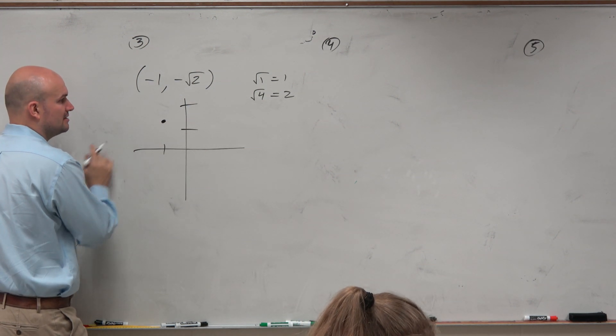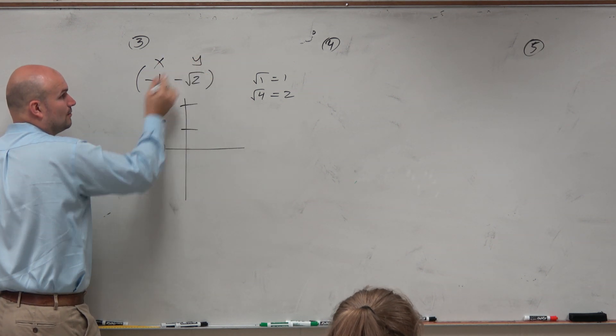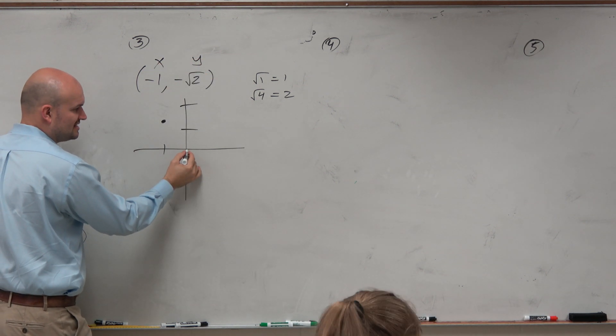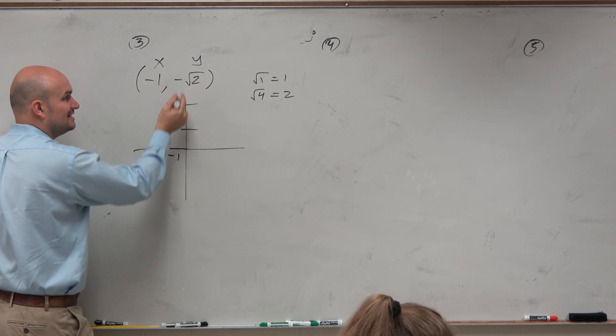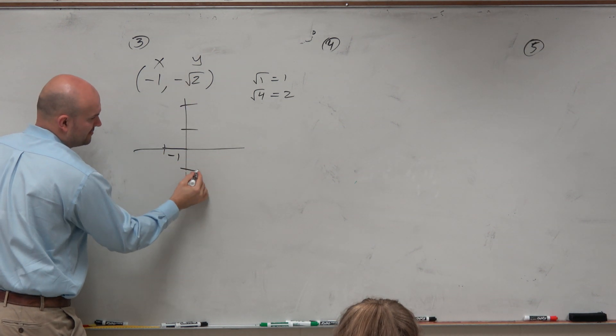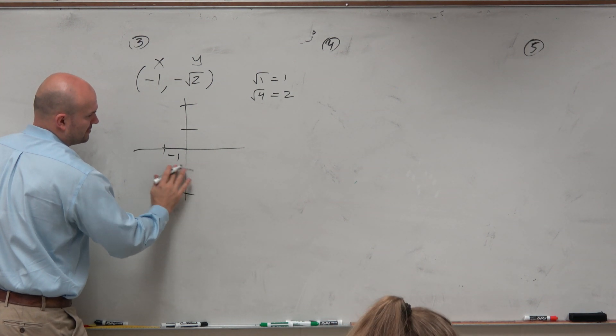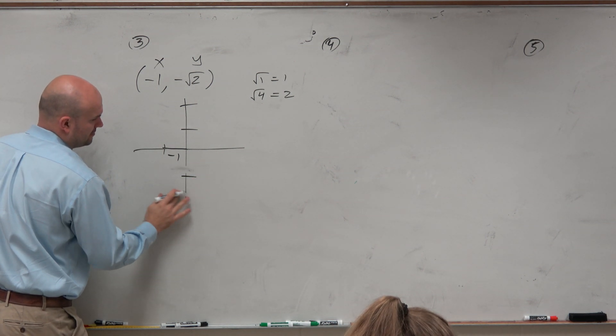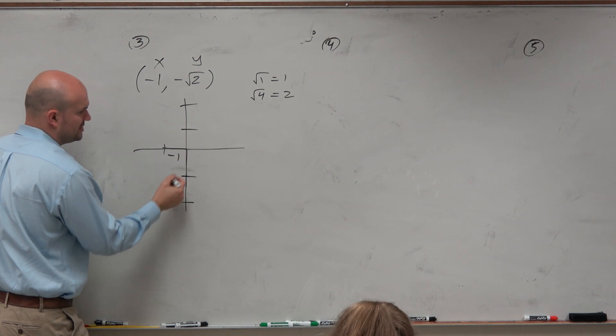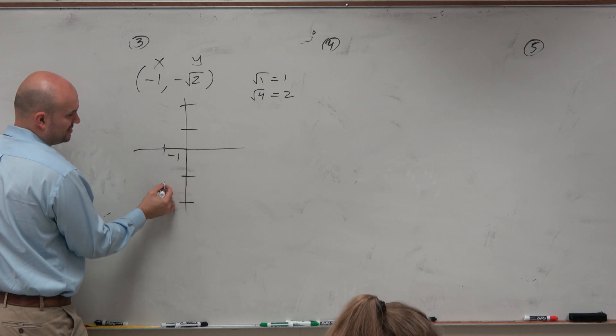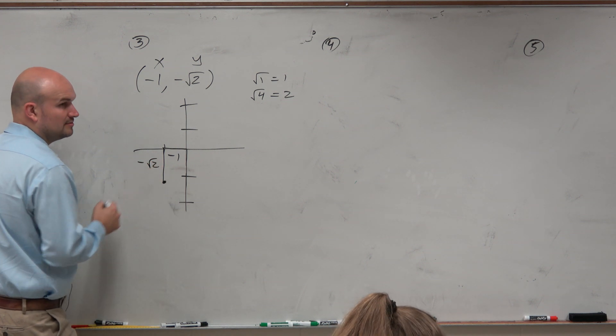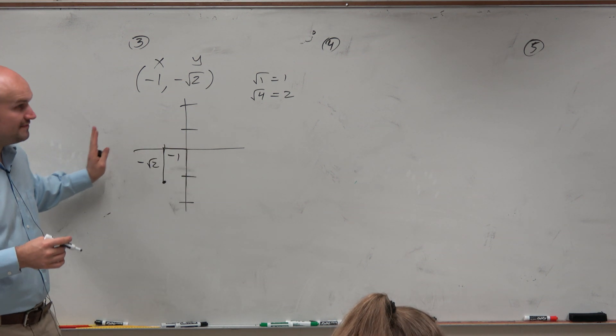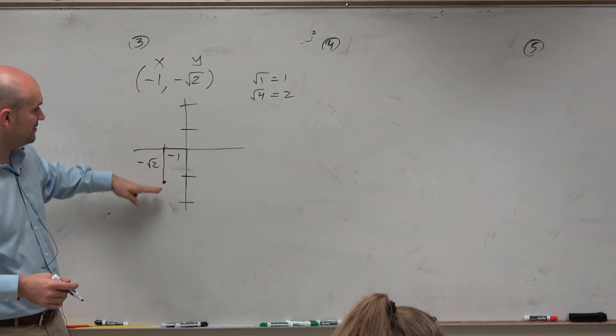So I'm just going to plot this point right here. Doesn't need to be perfect. But I know that that's the x-coordinate, and that's the y-coordinate. That's important, because the distance I traveled from here to here is negative 1. It needs to go negative, right? So I need to go down. Let's go a little bit further. So negative 1 and then down to negative square root of 2. Then this distance is negative square root of 2. So I went left, because it's negative 1, and then down negative square root of 2.